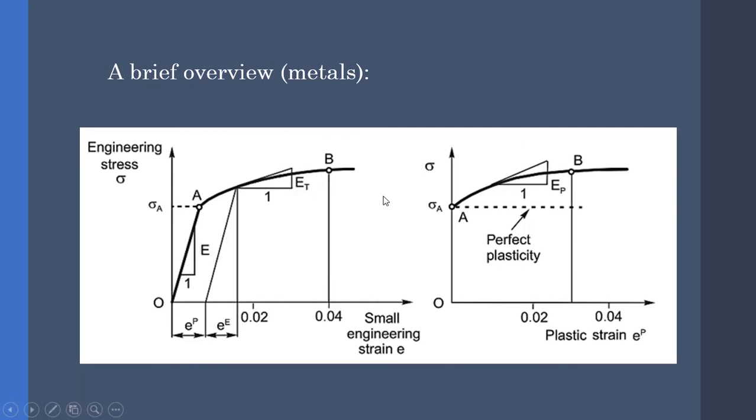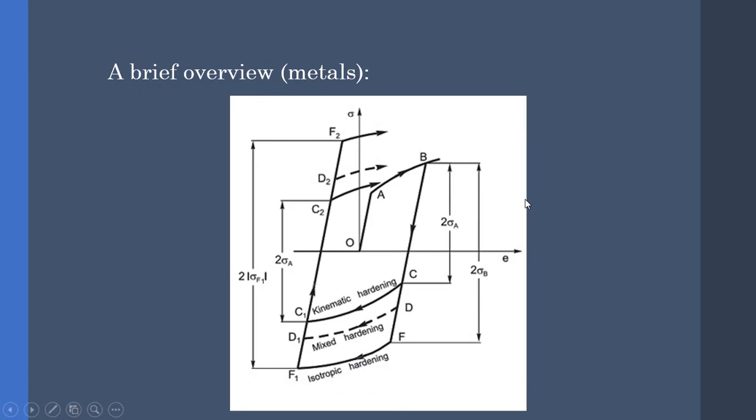In practice, the mixed hardening occurs, shown by the dashes here. Hence, the isotropic and kinematic hardening are theoretical. Nonetheless, calculating the mixed hardening is complicated due to the Bauschinger effect. Therefore, we use isotropic and kinematic hardening in our calculations, which simplify mixed isotropic models.